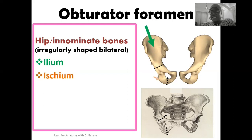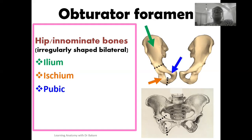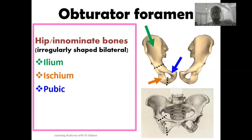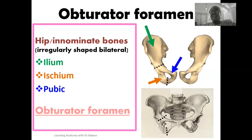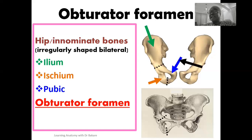Then we have the ischium, highlighted here at this point. The last bone forming the structural component of the hip bone is the pubic bone, highlighted here in blue. These three bones come together to form this irregularly shaped hip bone — one on each side. The obliterator foramen is the foramen created around the hip bone, highlighted here in black.